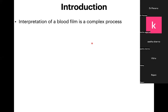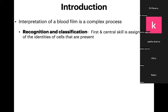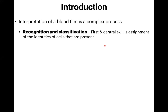It is a complex process, not a simple one. First, you need to identify the cell — that is the first and central skill required. That is the assignment of identities of the cells that are present. You recognize and then classify those cells into which categories they are falling.